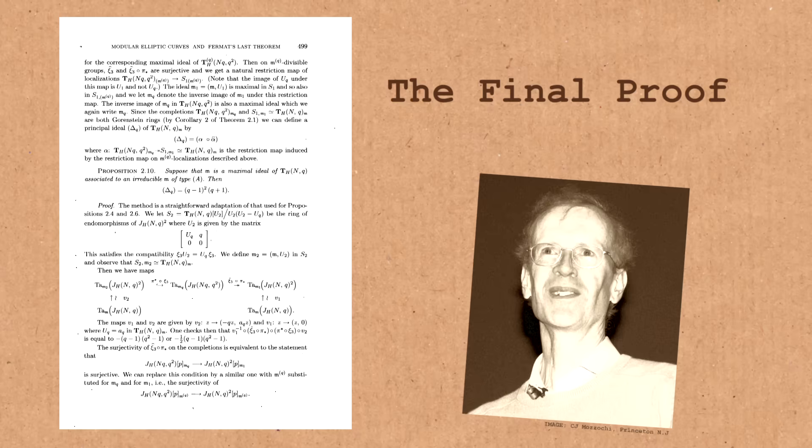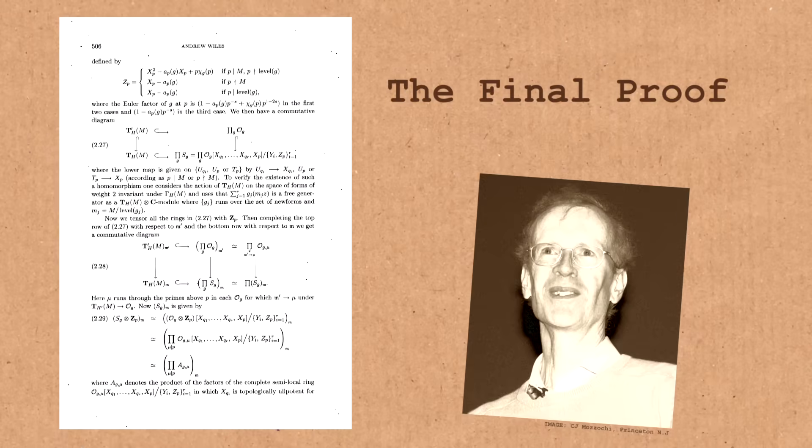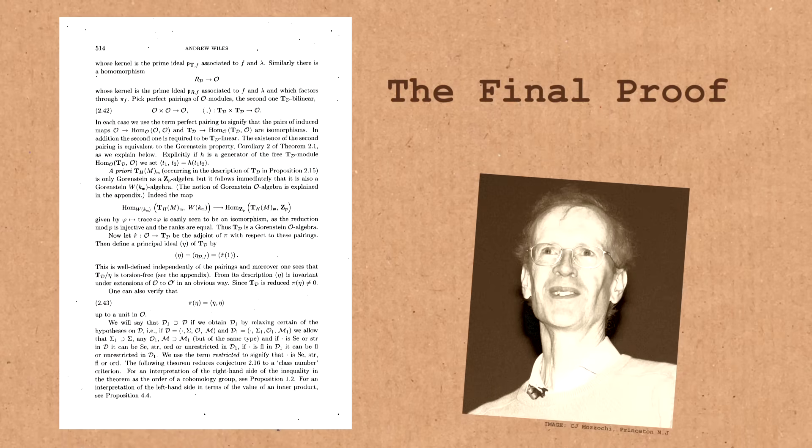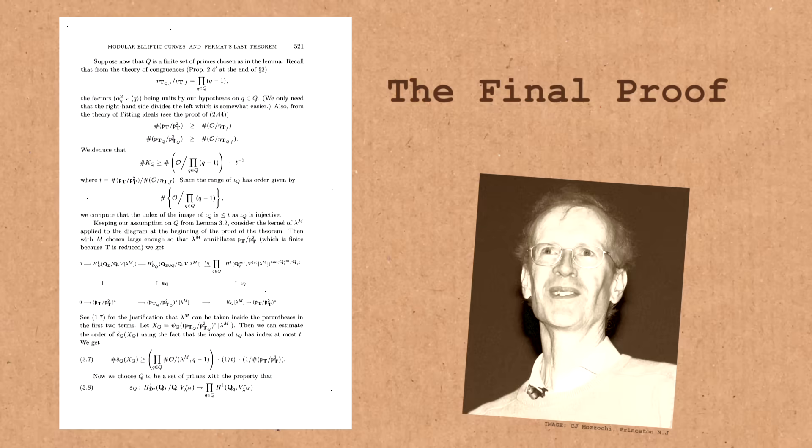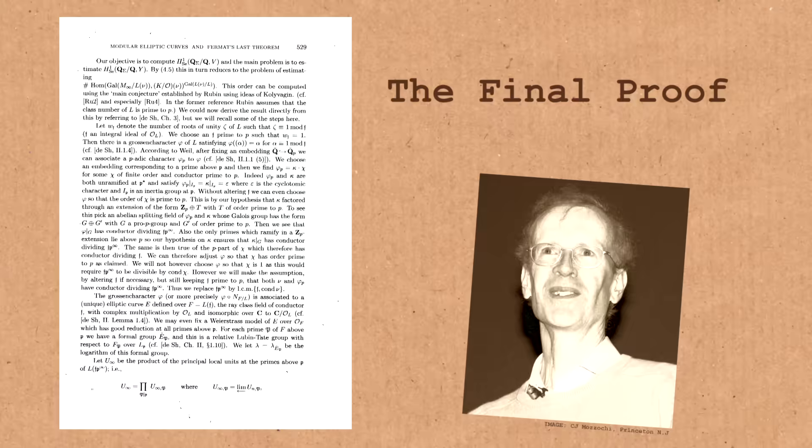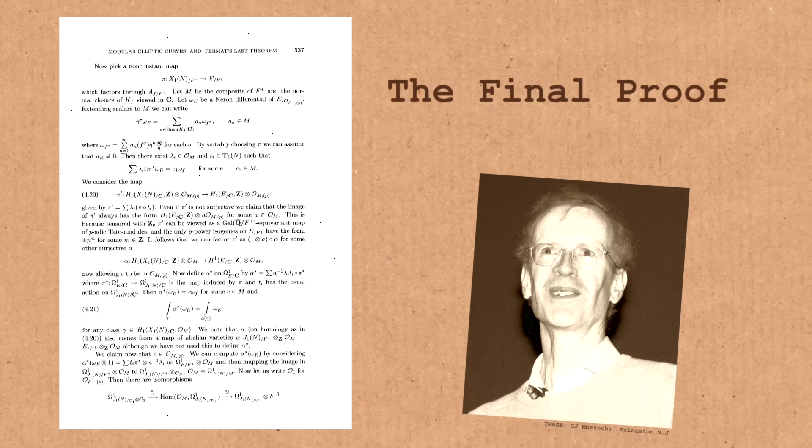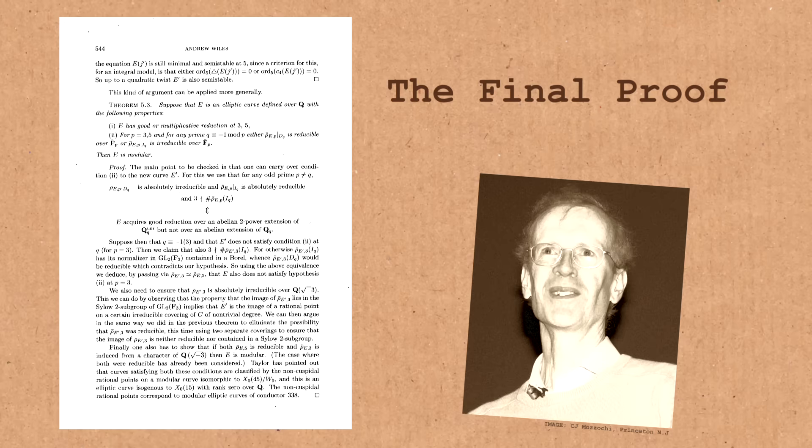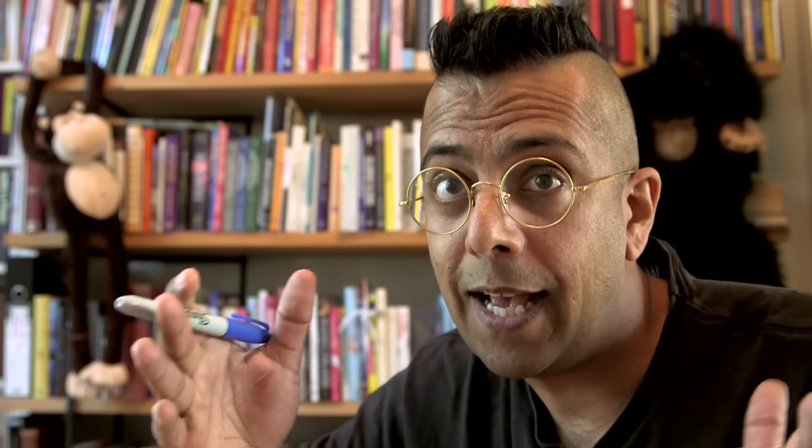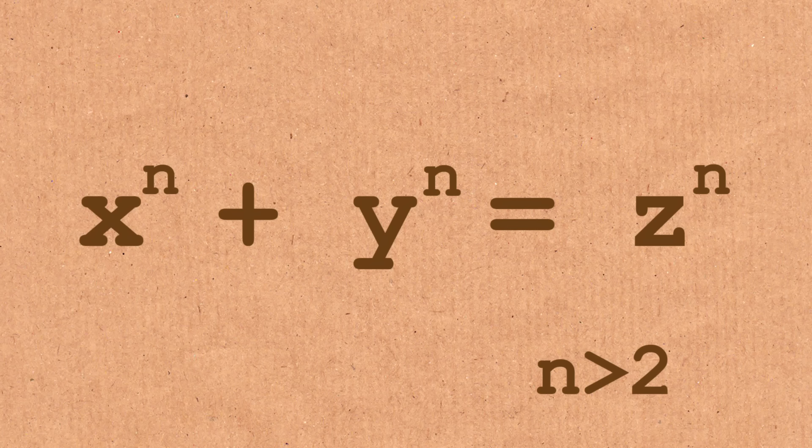And somebody, one mathematician, I think Pete Hine, once wrote, a problem worthy of attack proves its worth by fighting back. And that's what Fermat's Last Theorem was doing. It was fighting back. But Wiles proved that he was too good. And, of course, what Wiles proved is that Fermat was right. This equation, x to the n plus y to the n equals z to the n, n bigger than 2, has no whole number solutions. And that's the end of the story.